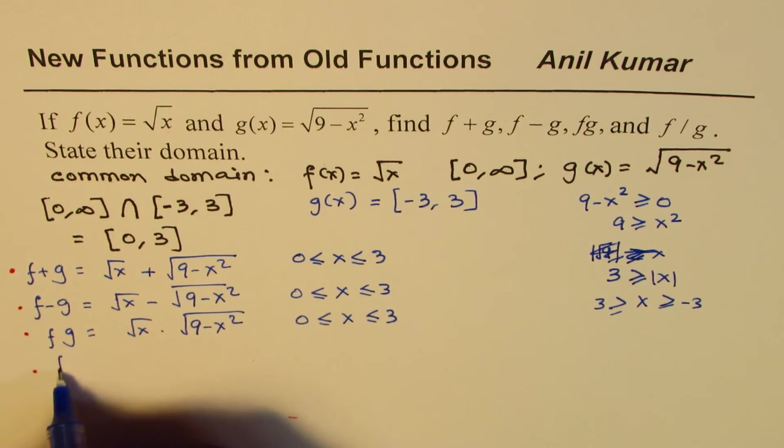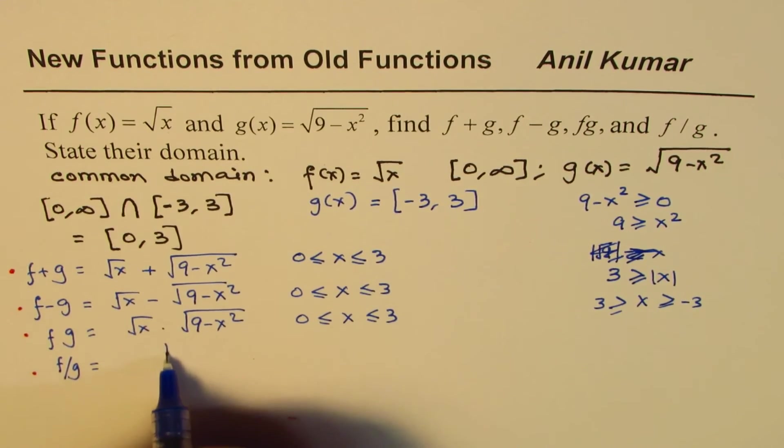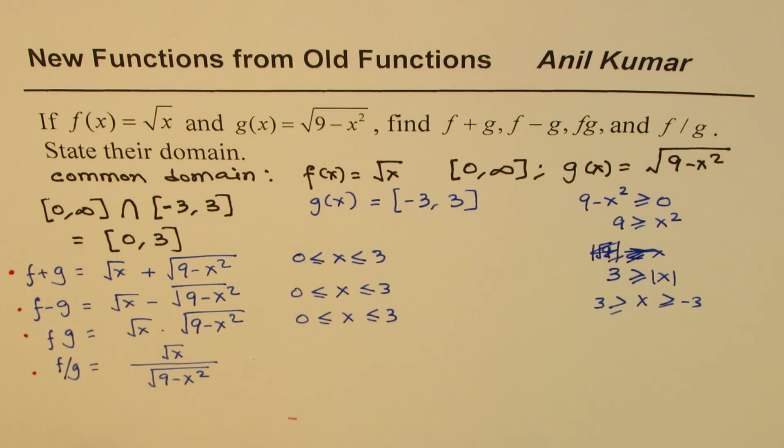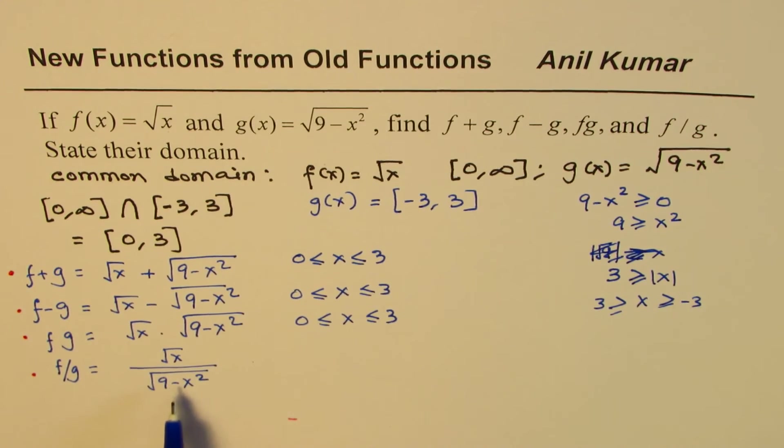So f divided by g. f divided by g will be square root of x divided by square root of 9 minus x squared. Now as soon as we have something in the denominator, it cannot be 0 since you cannot divide by 0. Now this function is 0 for plus and minus 3.